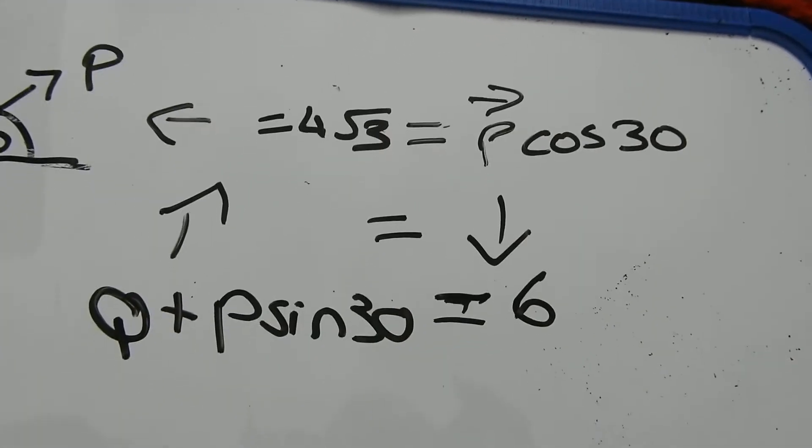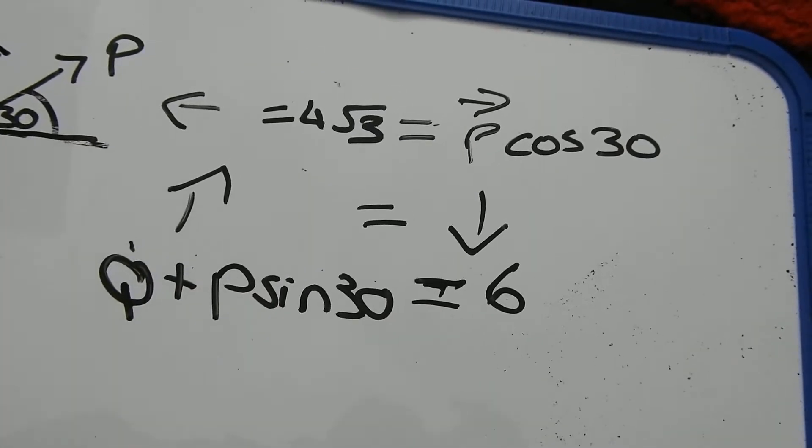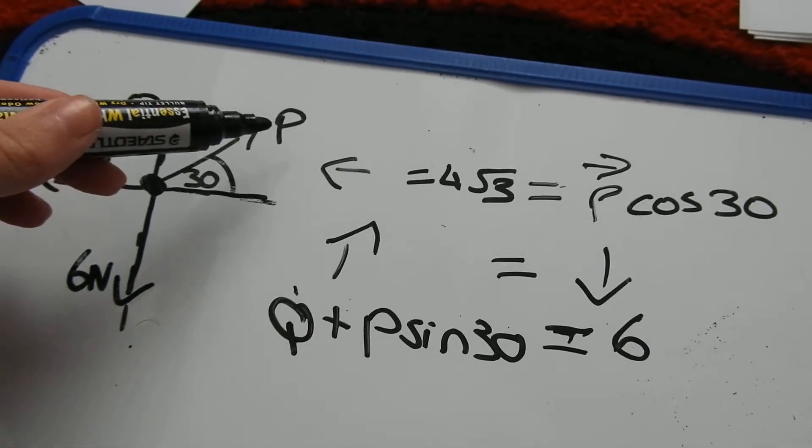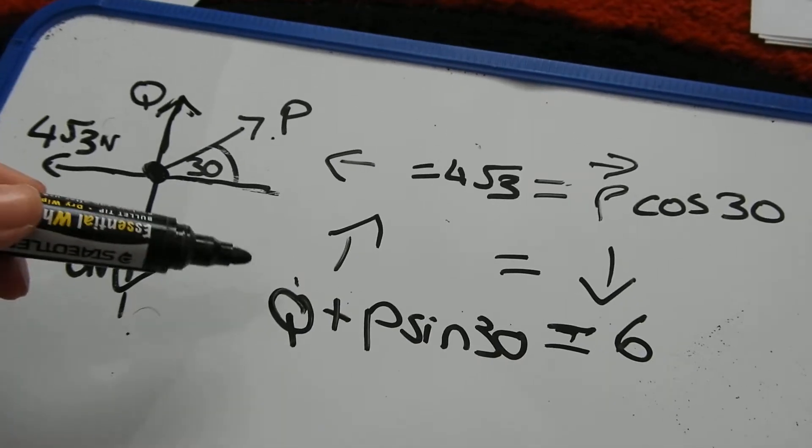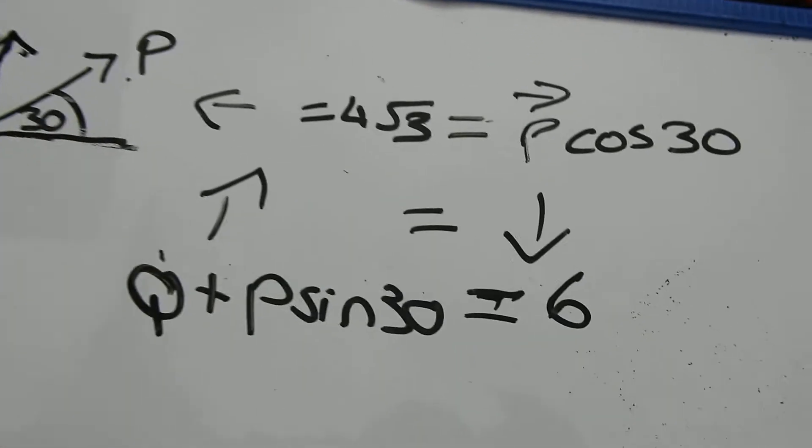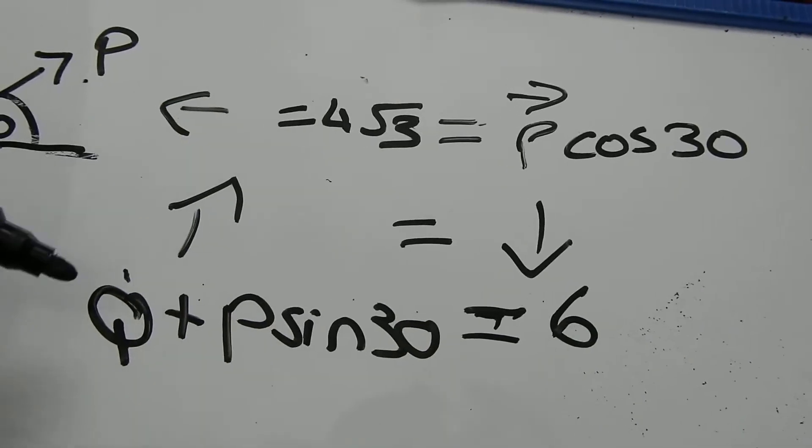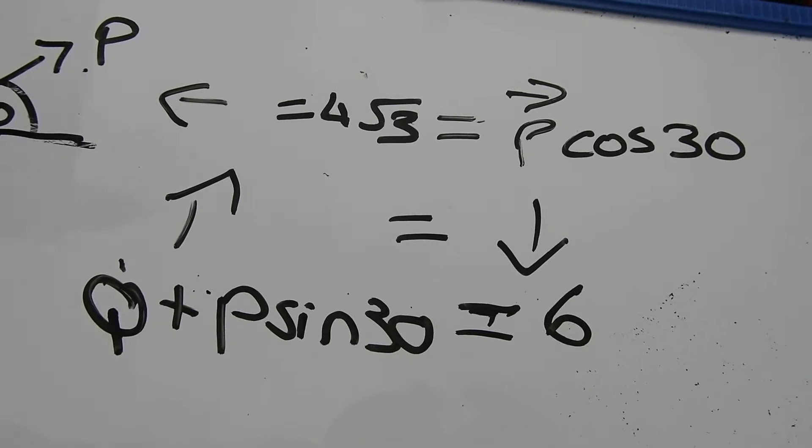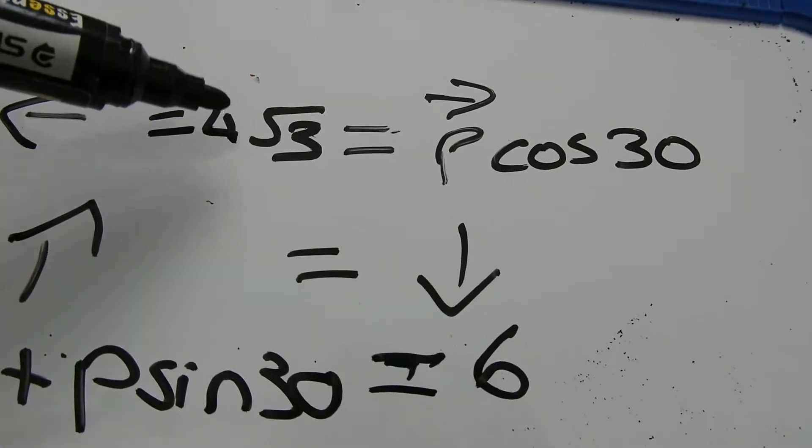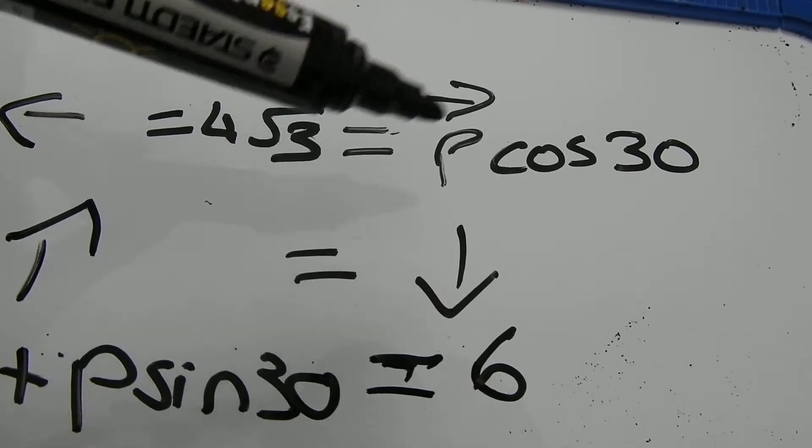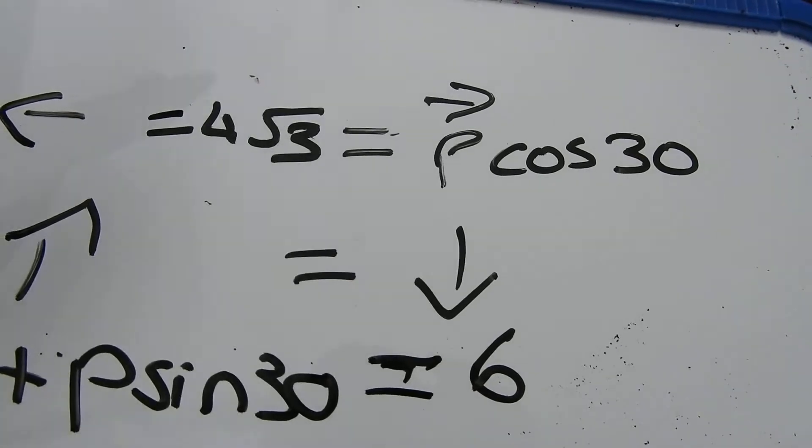So now what we have to do for part C is to use these two equations to find our unknown force P and Q. I need to look at which one would be easiest to rearrange. Now looking at the bottom one here, it is two unknowns, Q and P. There's no point in using that one. At the top equation, we have 4 root 3 equals P cos 30. So it's going to be easy to rearrange this equation in terms of P. So I'm going to do that.